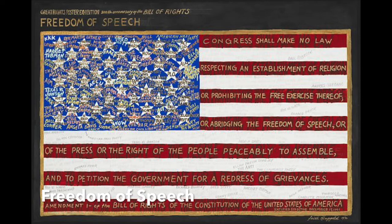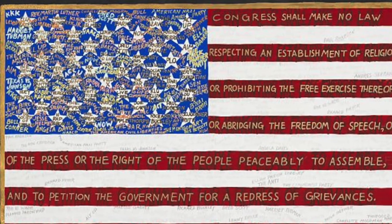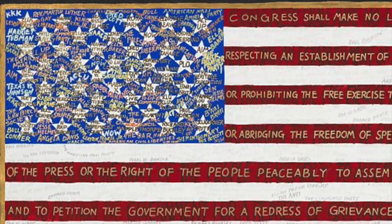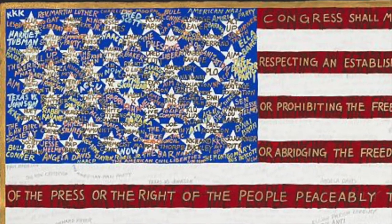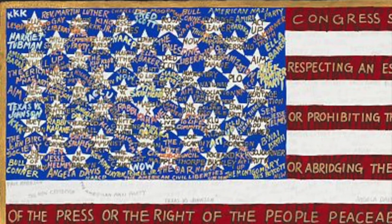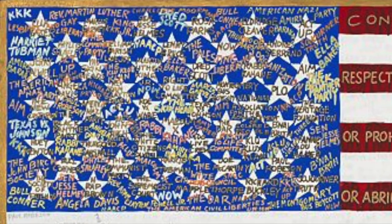Faith Ringgold chose an American flag with the words of the First Amendment of the Bill of Rights, which guarantees freedom of speech, for her painting. She included the names of many social and political leaders among the stars. Some of these people were leaders who fought against racism. Others were hate groups that believed in white supremacy. Why would she include both? Freedom of speech gives everyone the right to share their opinion, even if their message is filled with hate and we disagree with what they have to say.